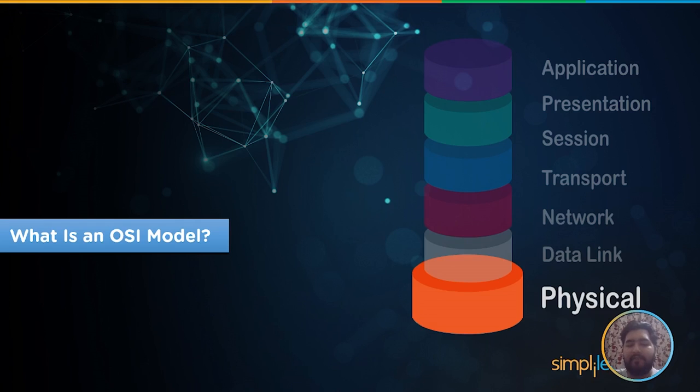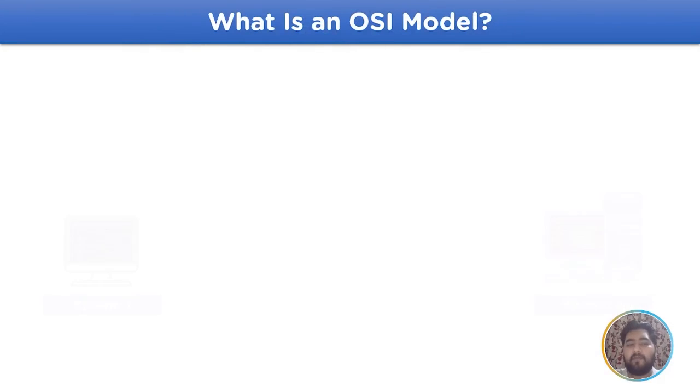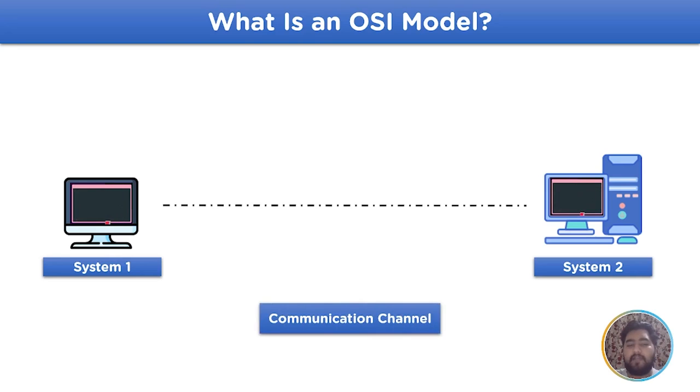Now, let's get started with the first topic that is what is an OSI model? To better understand the OSI model's role in transmitting data from network to another, let's consider we have two networking devices between which data is being transferred. The path between the devices is called communication channel.